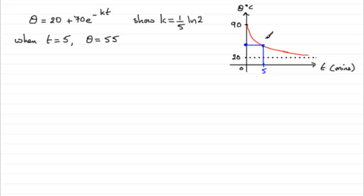So to do this, what I need to do is place these values into our equation. So we therefore have 55 equals 20 plus 70 multiplied by e to the minus kt. Well I'm going to write that as 5k, minus 5k.